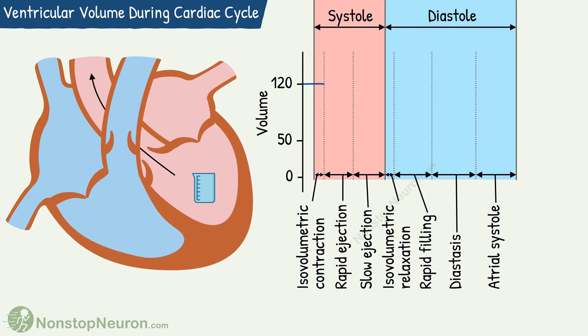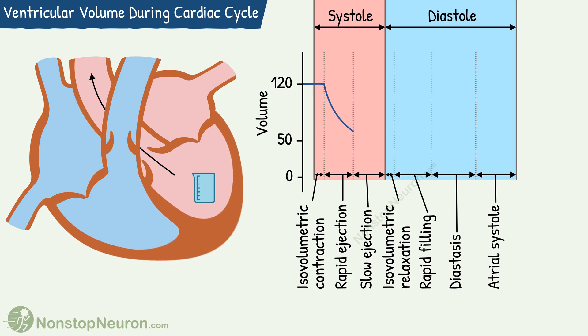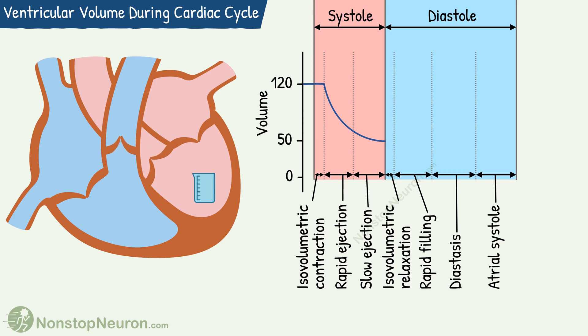Initially there is rapid ejection, so there is a rapid fall in the volume. Then the ejection gets slower, so the fall becomes less rapid. Then the ejection ends and semilunar valves close.